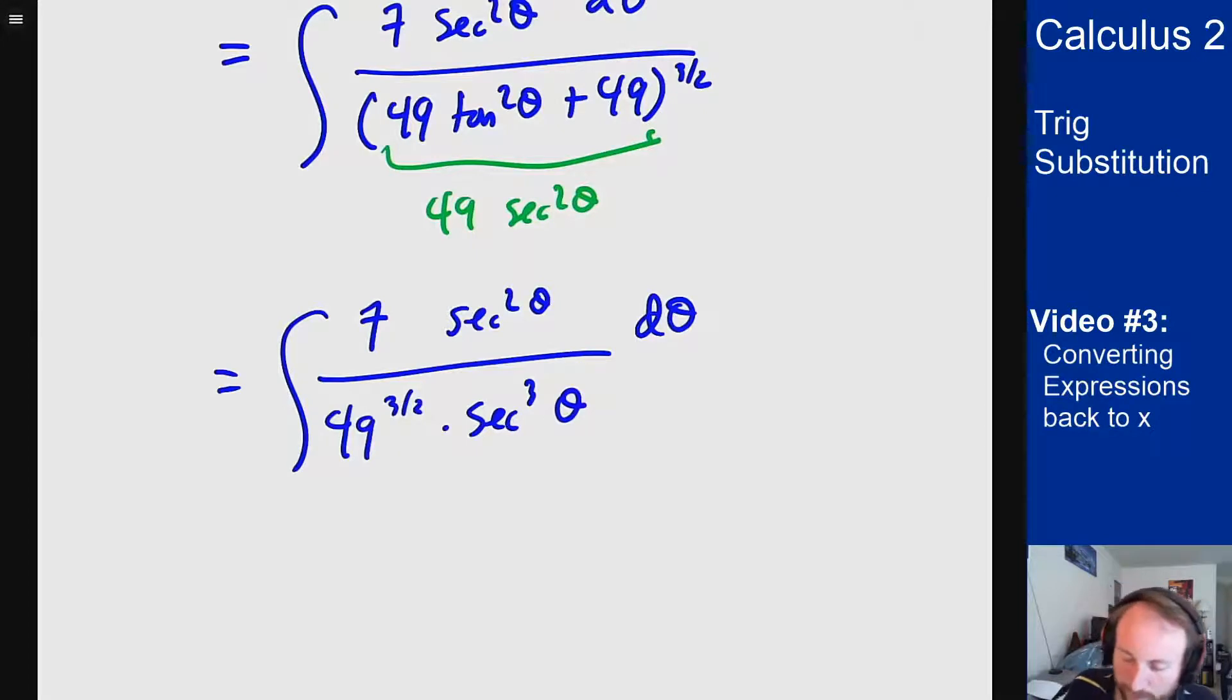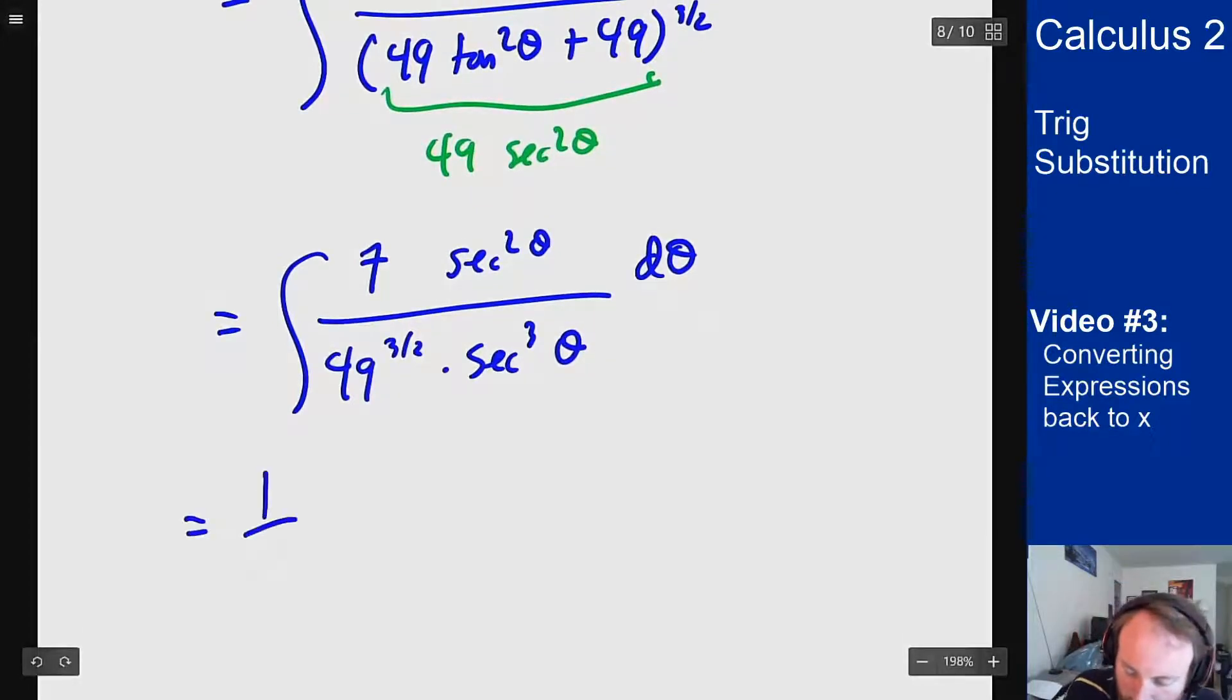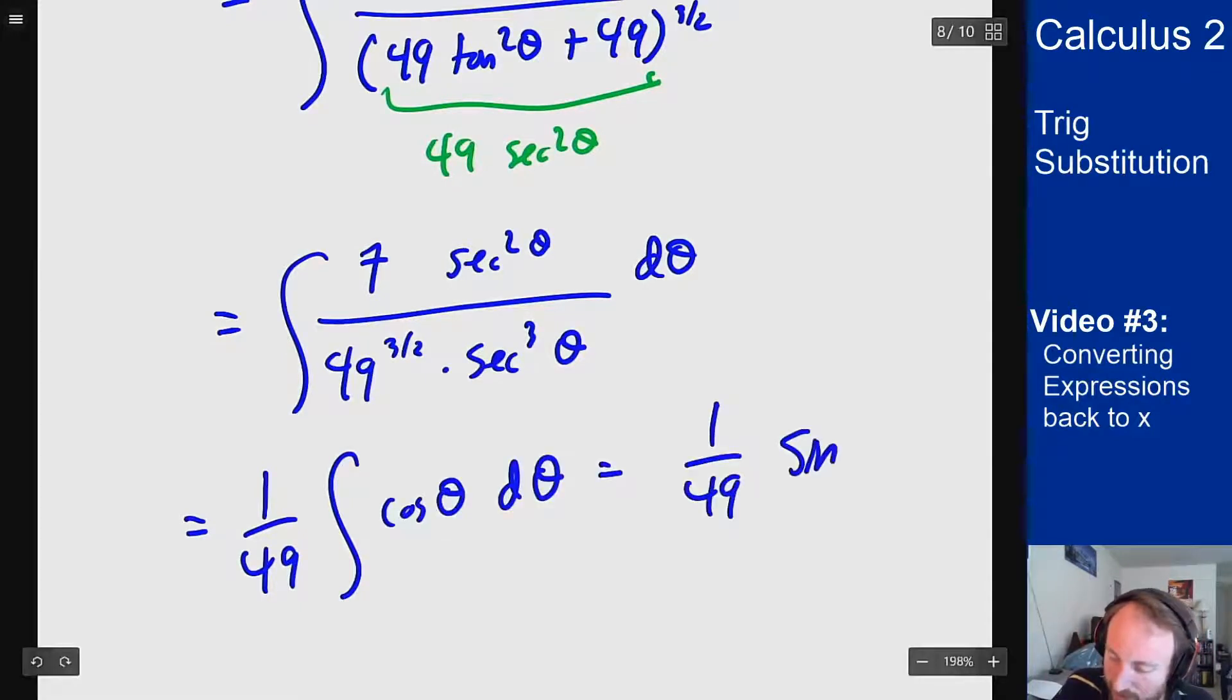A 7 on top gives me a 1 over 49 on the bottom. So 1 over 49 integral secant squared over secant cubed is cosine. So 1 over 49 sine theta plus c.